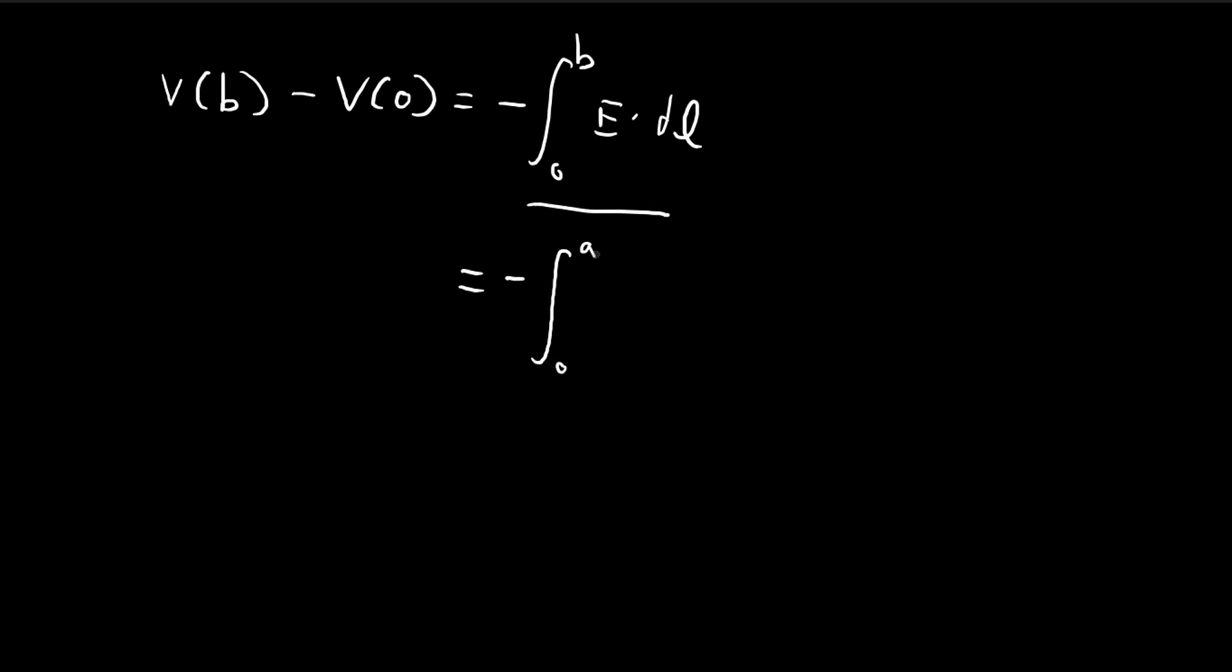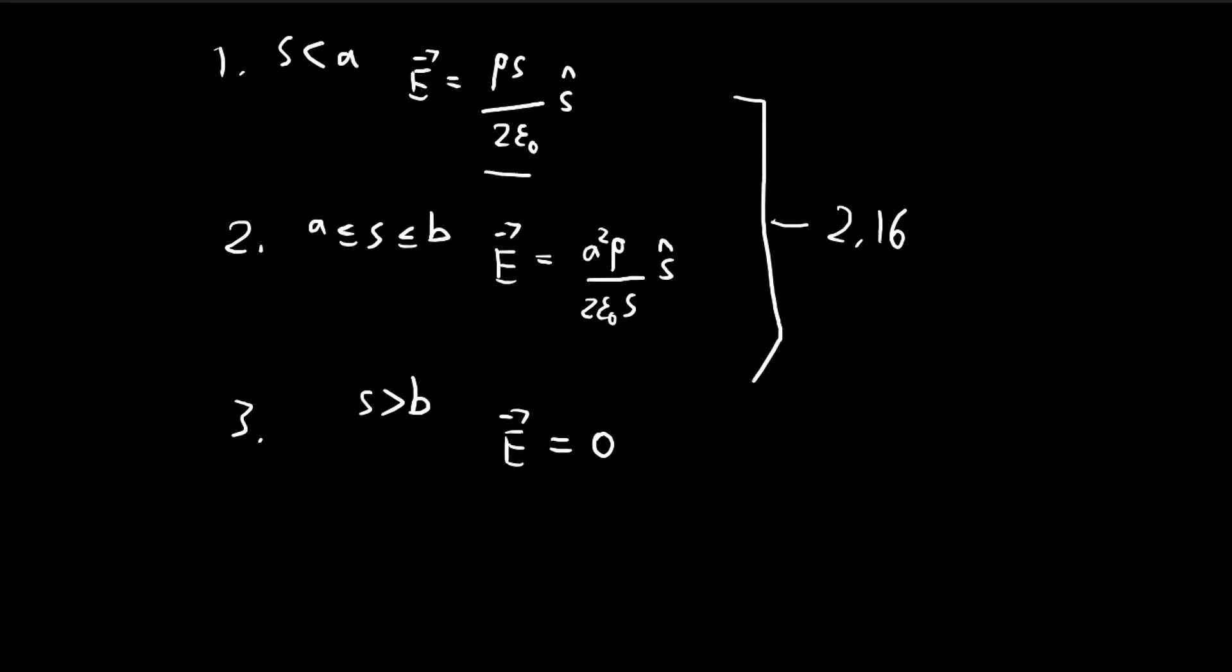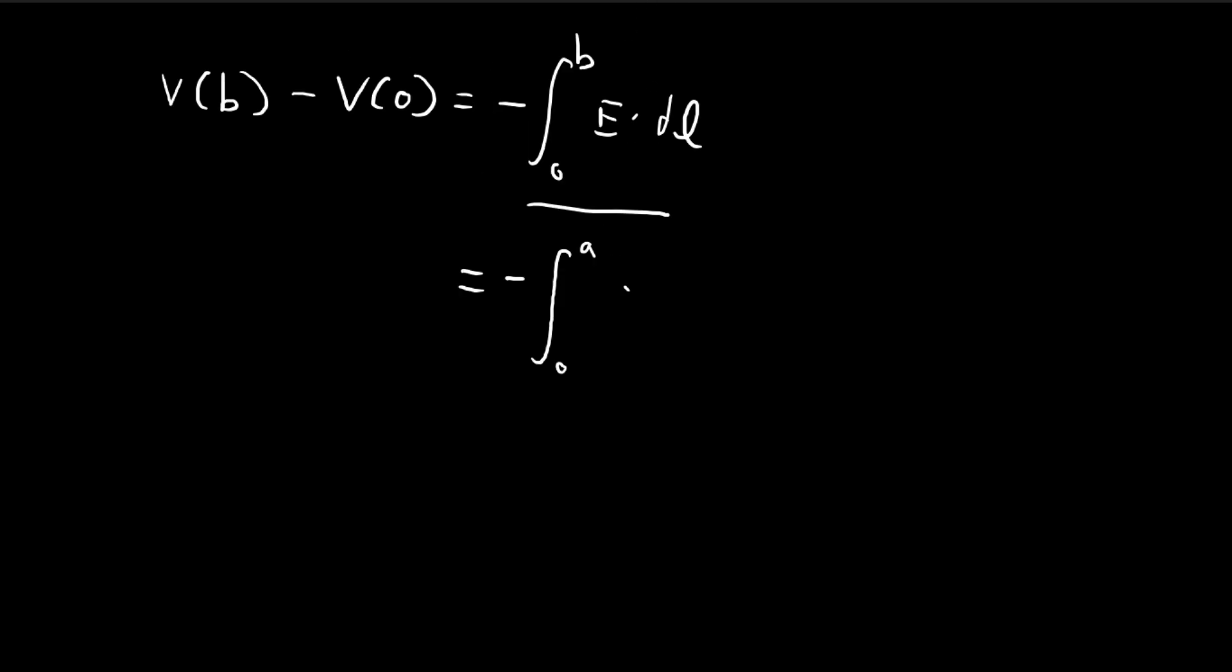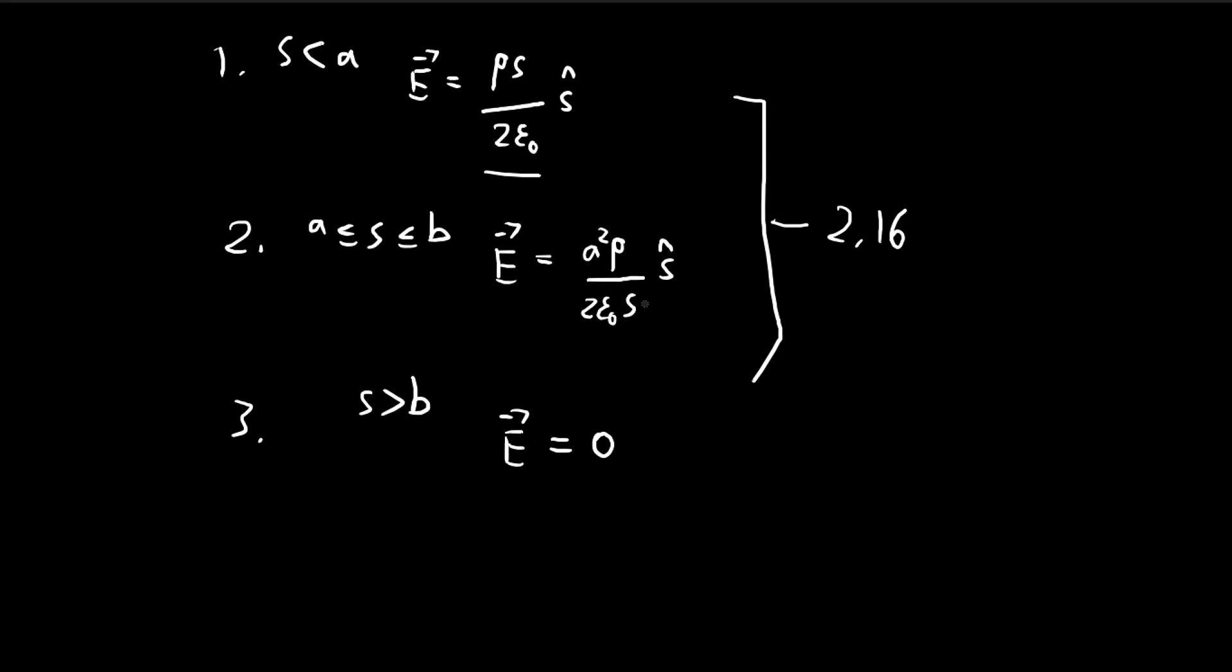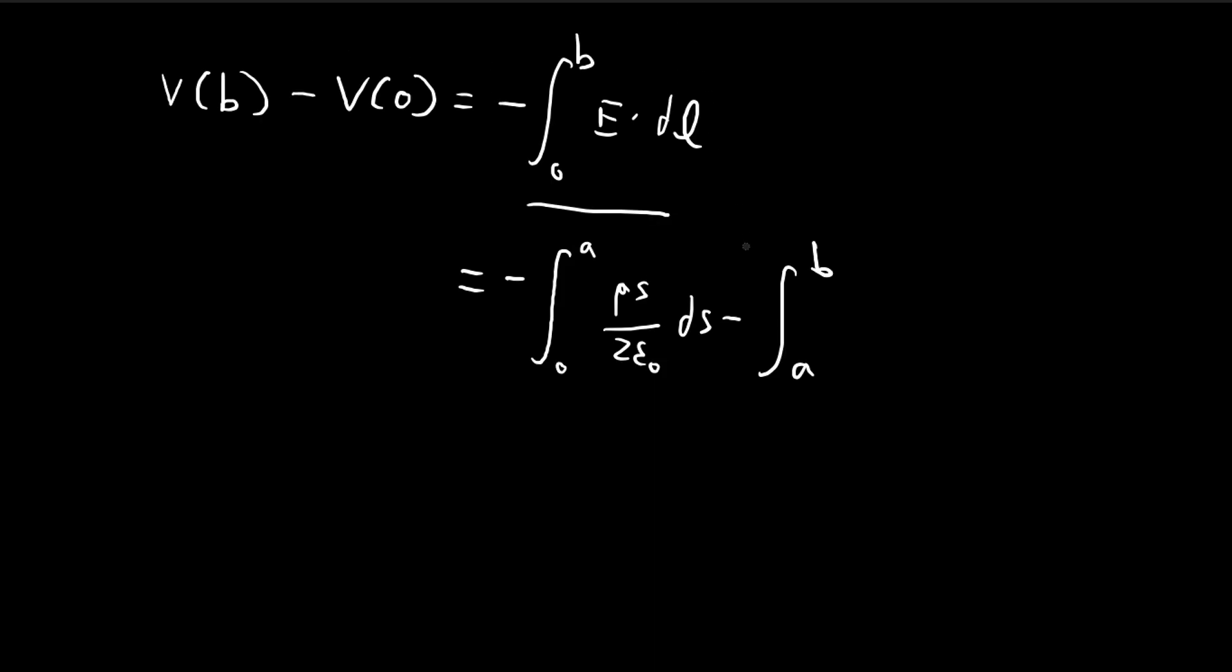From 0 to A, the electric field is going to behave like this, so we get rho s divided by 2 epsilon ds. And from A to B, it's going to behave like this, so we change it to a square rho divided by 2 epsilon s ds.